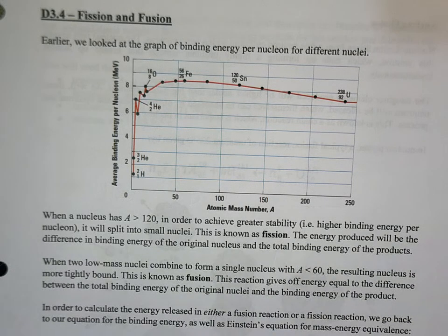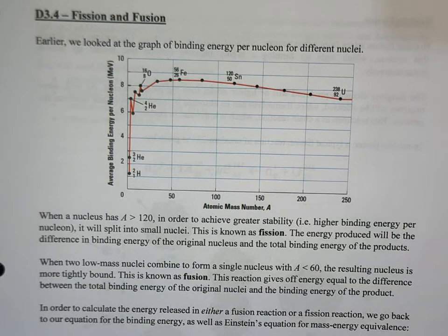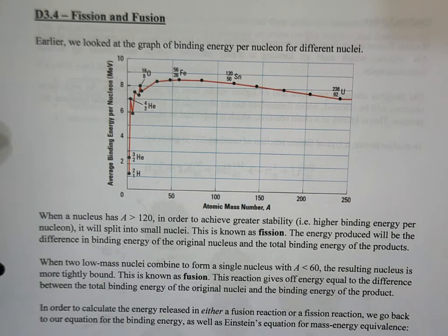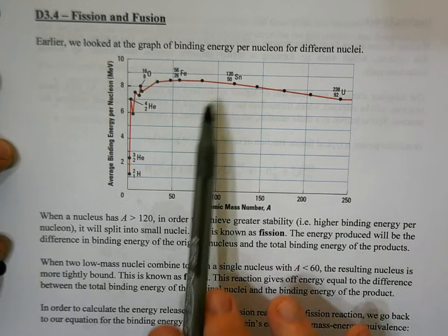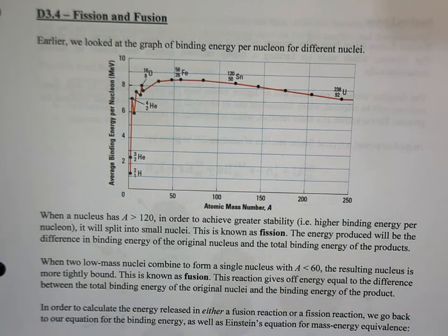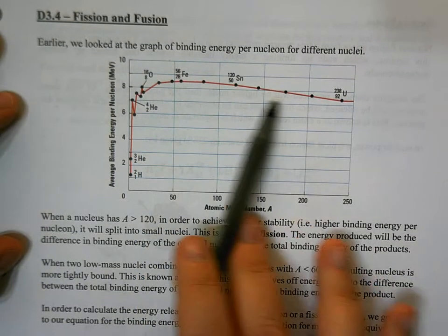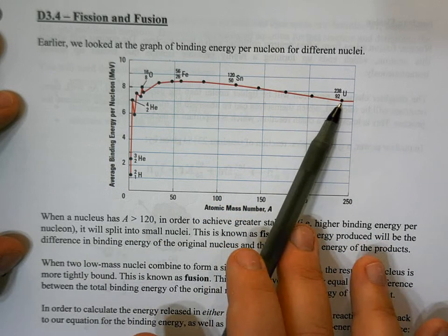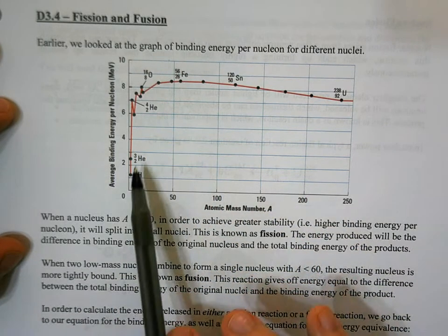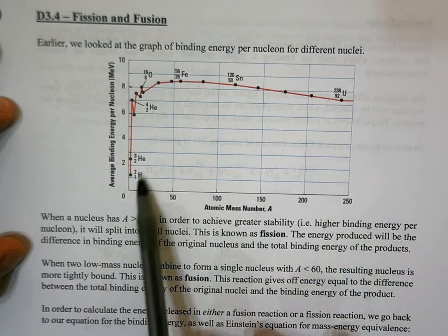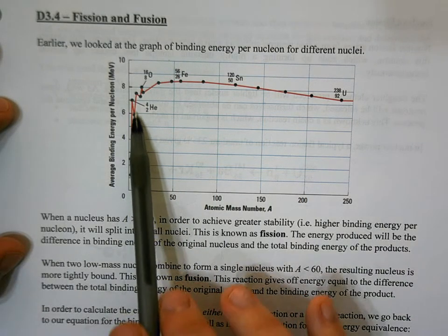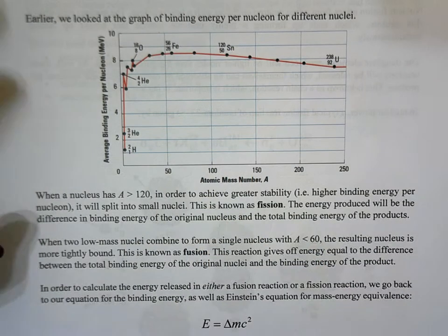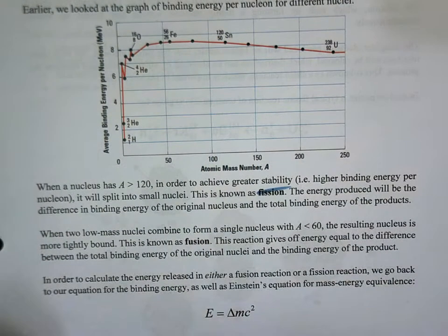It's time to get into the meat of nuclear physics — this is where we have the more intensive math. Coming back to the binding energy graph as a function of atomic mass number: the goal is always to get as high up on the y-axis as possible. On the right side of the curve, splitting into smaller pieces achieves that. On the left side, merging together moves us up the curve. In the region where splitting achieves greater stability, we're dealing with fission.